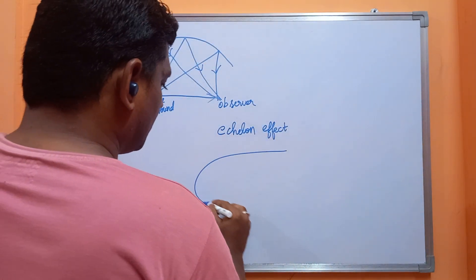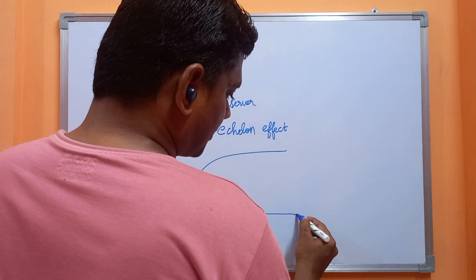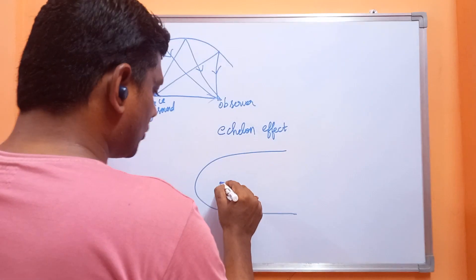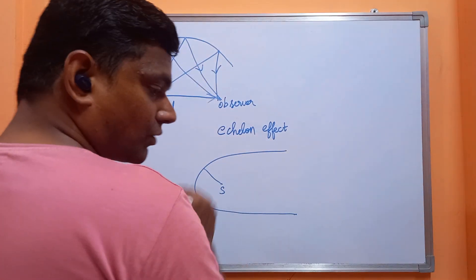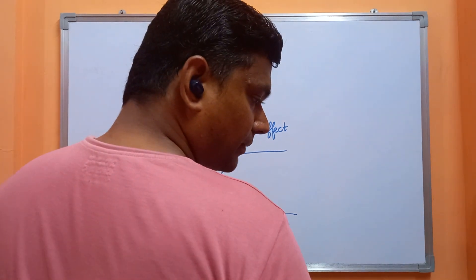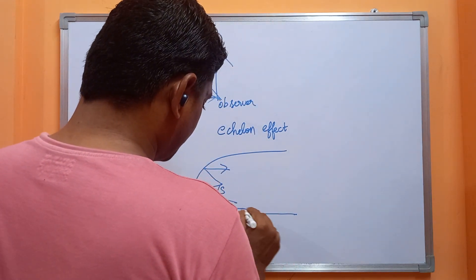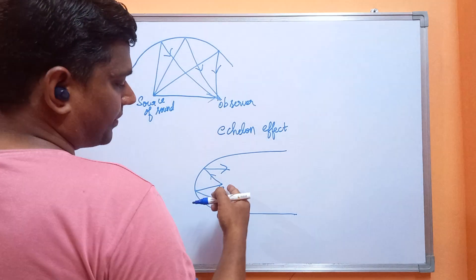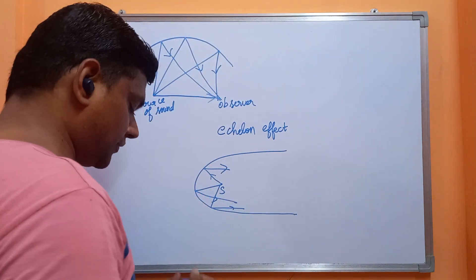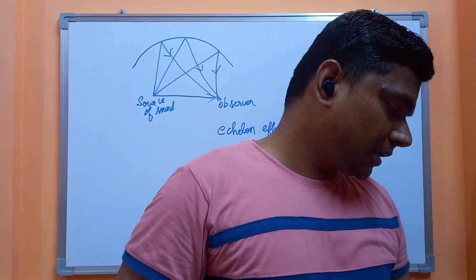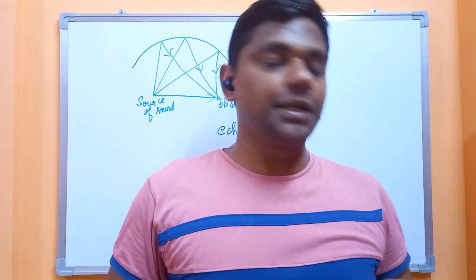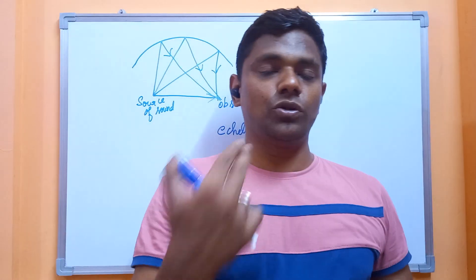A parabolic shape is recommended for a good auditorium design. With a parabolic shape, the source of sound placed at the focus allows the walls to reflect sound uniformly to all listeners. This design ensures that reflected sound from the walls reaches the audience clearly and evenly distributed across the hall.